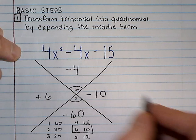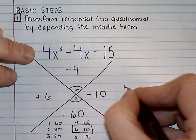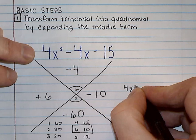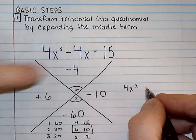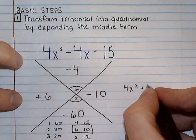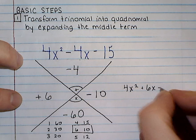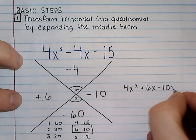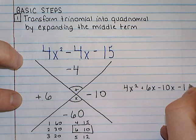And so what I'm going to do is rewrite my problem. I'm going to write my first term, 4x squared, but instead of writing my second term, I'm going to use these two numbers. Plus 6x minus 10x, and then I'm going to write my last term, my minus 15.